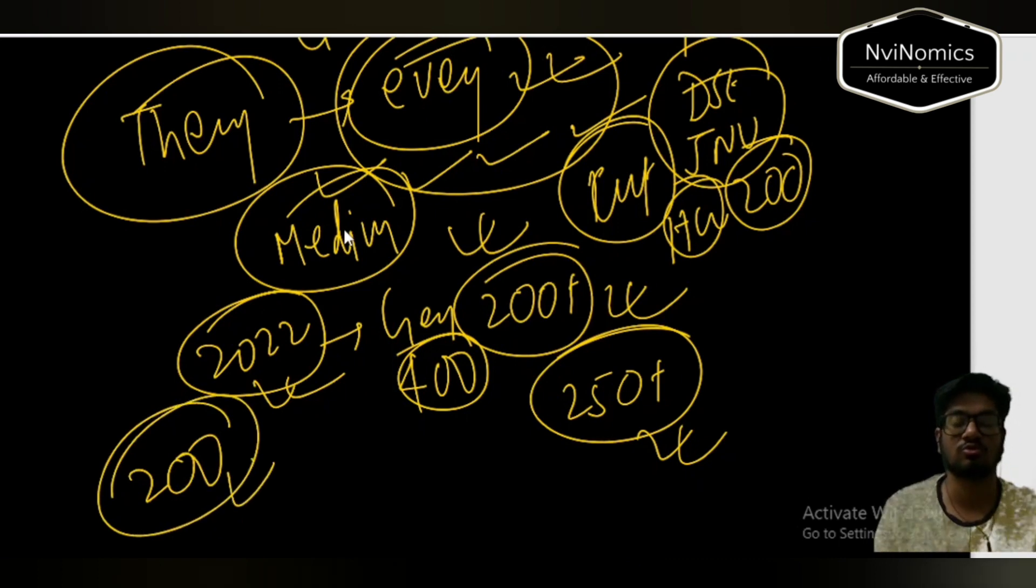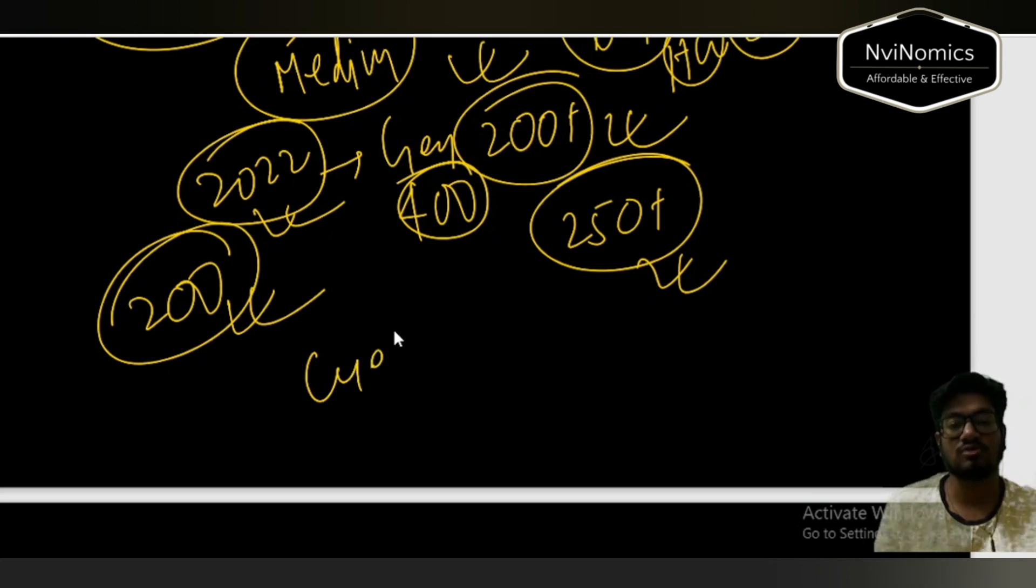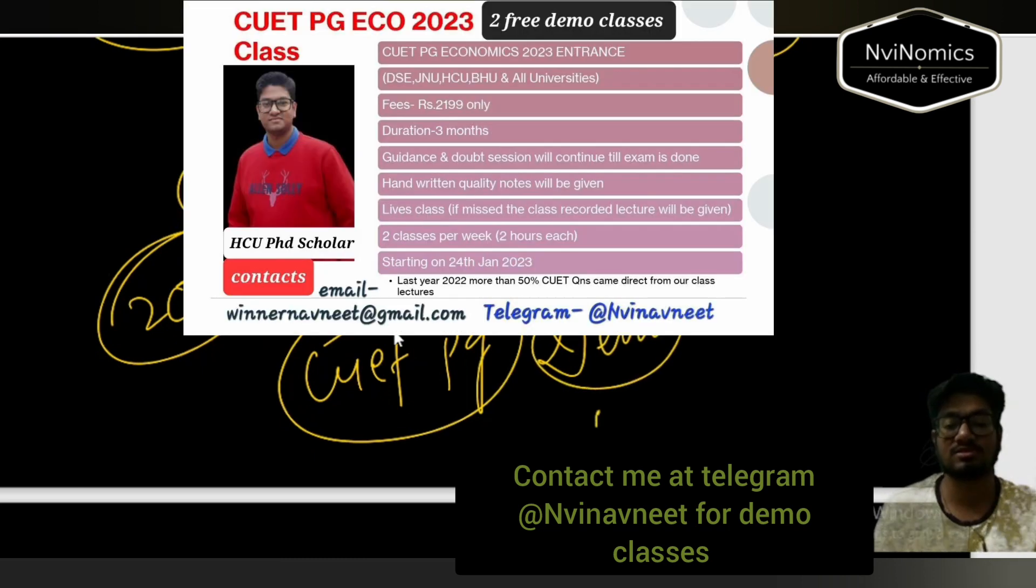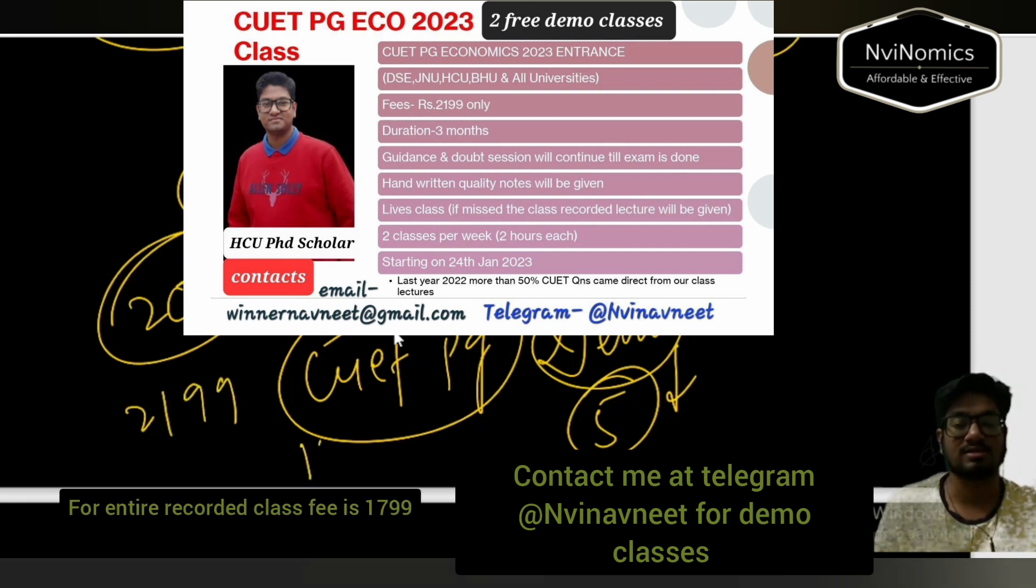Please look into it. Many of you have not joined the course, so you can join the course CUET PG Economics. I have given all the demo classes - five demo classes, nobody gives five demo classes. You watch, if you are interested you can definitely join the course. Fees only 1799 for recorded classes.